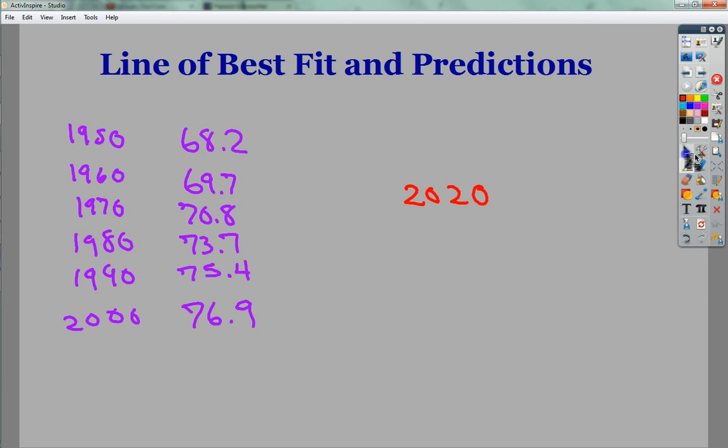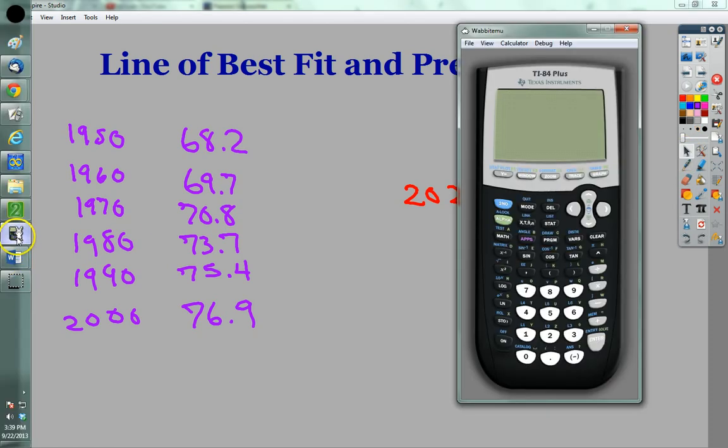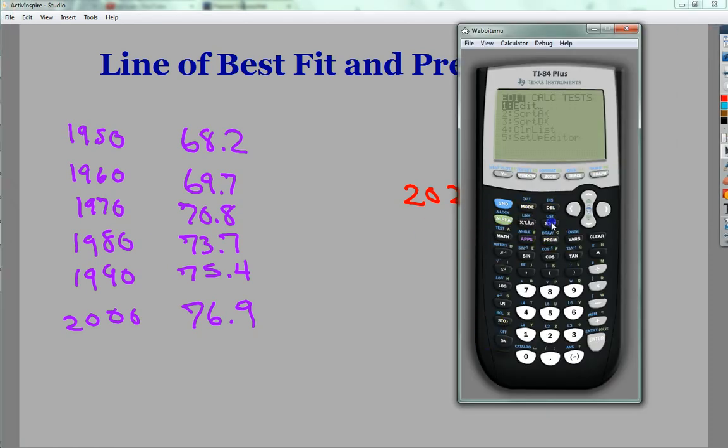So I'm going to go to my calculator and find the line of best fit first. Go to my stat menu, hit edit, go down and I have my information that I have in here.